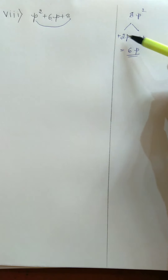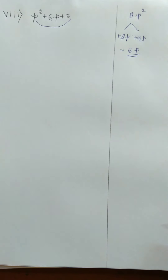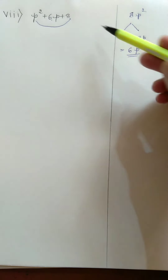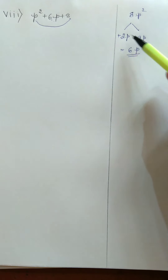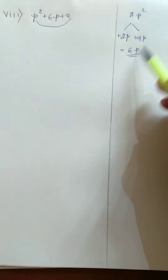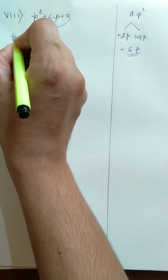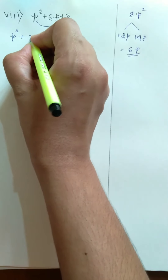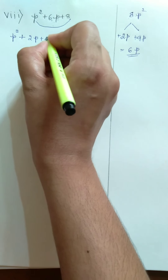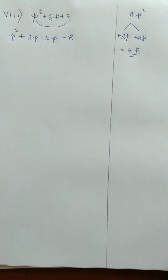When we multiply the factors 2P into 4P, we get 8P squared. Then we need to get the middle term 6P by applying signs to both factors. Now write P squared plus, and in the place of 6P, write 2P plus 4P, so the expression becomes P squared plus 2P plus 4P plus 8.